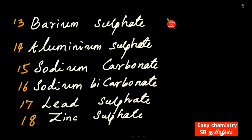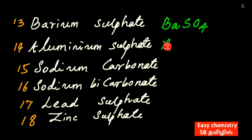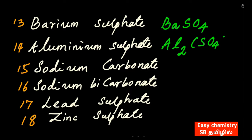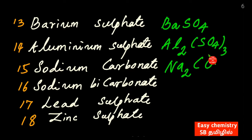Next, barium sulfate: BaSO4. Aluminum sulfate: Al2(SO4)3. Sodium carbonate: Na2CO3.